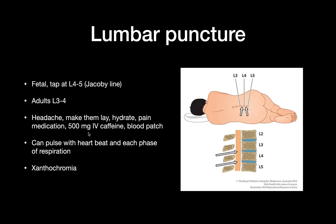For very bad headaches, you give 500 milligrams of IV caffeine. For the most serious complication, you give them a blood patch. When you tap the CSF, it can pulse with each heartbeat and each phase of respiration. A complication showing in the CSF would be xanthochromia — normally the CSF is clear and colorless, but in xanthochromia it becomes yellow and cloudy. That is an indication of a subarachnoid hemorrhage, which could be due to trauma or nicking one of the small veins or capillaries during the procedure.